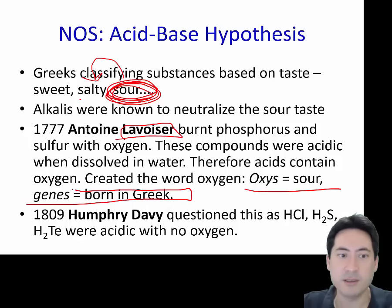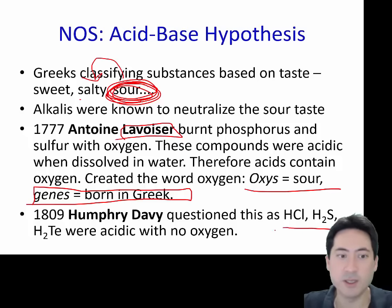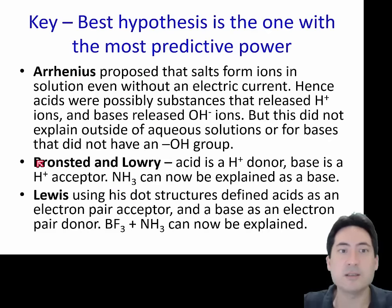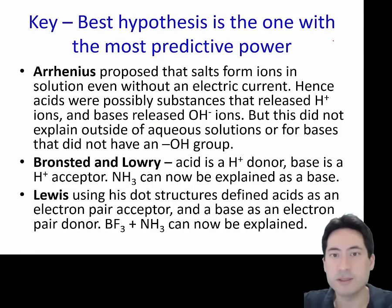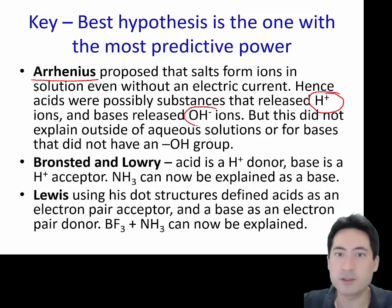So that was the idea of where acids came from — they were things burnt with oxygen. But later on, Davy found there were other compounds that didn't have oxygen in them and yet acted as acids. Getting into the more thorough details: Arrhenius is what you've probably learned before, where if you just have the hydrogen ion pop off, that's an acid, and if you have the hydroxide ion pop off, it's a base.